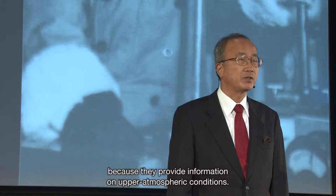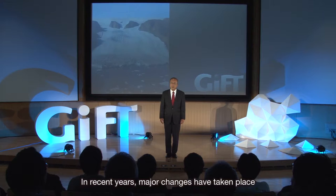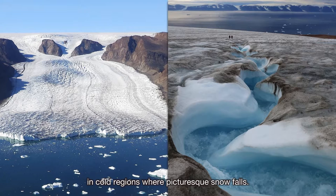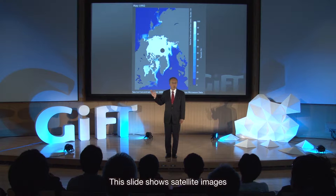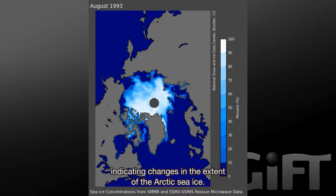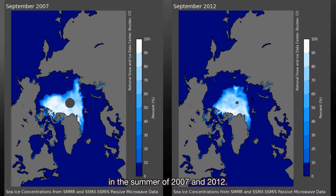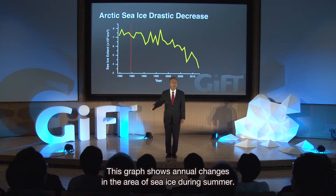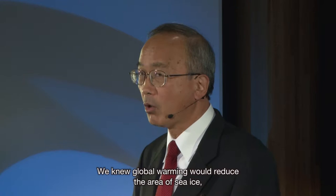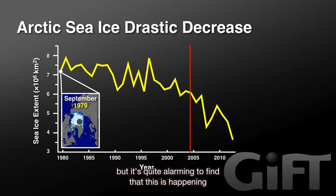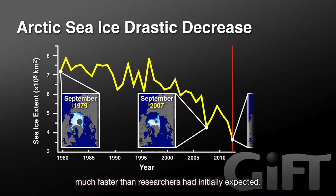Snowflakes provide information on upper atmospheric conditions. In recent years, major changes have taken place in cold regions where picturesque snow falls. This slide shows satellite images indicating changes in the extent of Arctic sea ice. Sea ice is produced each winter and melts in summer. A dramatic decrease in the amount of sea ice was seen in the summers of 2007 and 2012. This graph shows annual changes in the area of sea ice during summer. We knew global warming would reduce the area of sea ice, but it's quite alarming to find that this is happening much faster than researchers had initially expected.